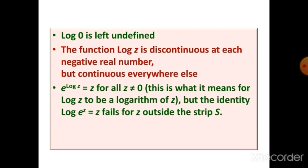Also log 0 is undefined. The principal value of log z is discontinuous along each point of the negative real axis, but continuous everywhere else. A key asymmetry: e^(log z) = z for all z ≠ 0, but log(e^z) need not equal z in general — again because e^z is periodic. On any strip of length 2πi (e.g., 0 ≤ Im(z) < 2π), e^z takes each value exactly once, so the inverse is unique on that strip. On the full complex plane, however, log(e^z) can take different values.